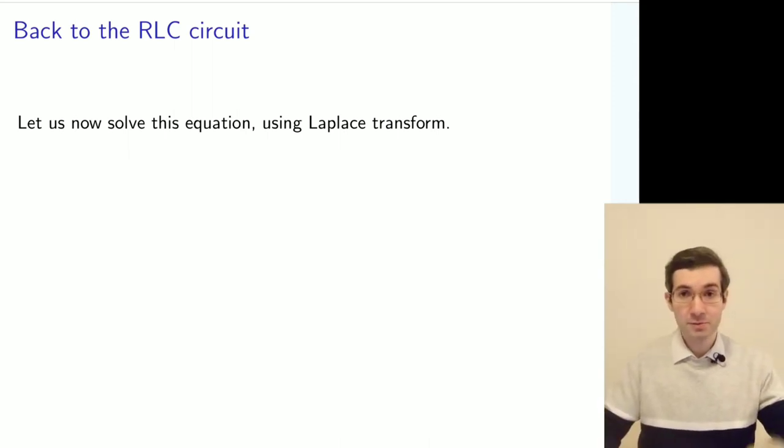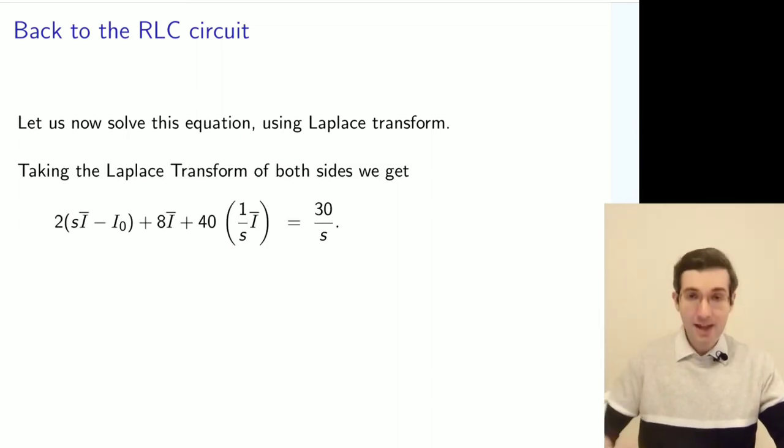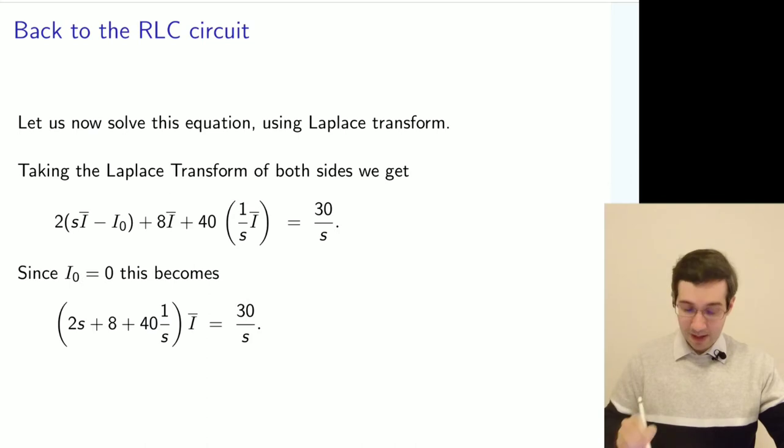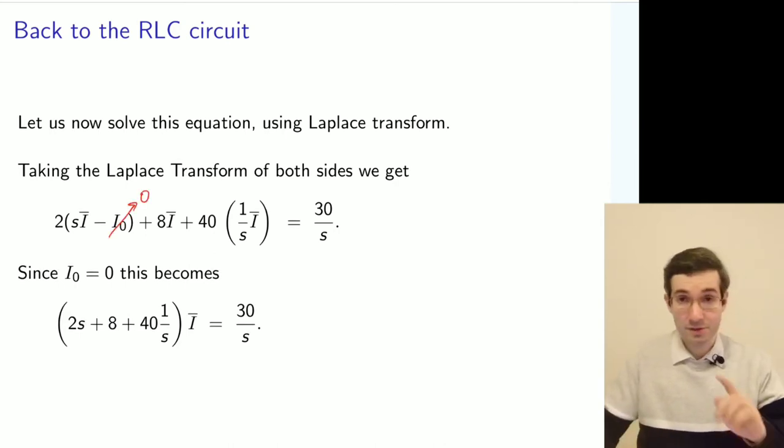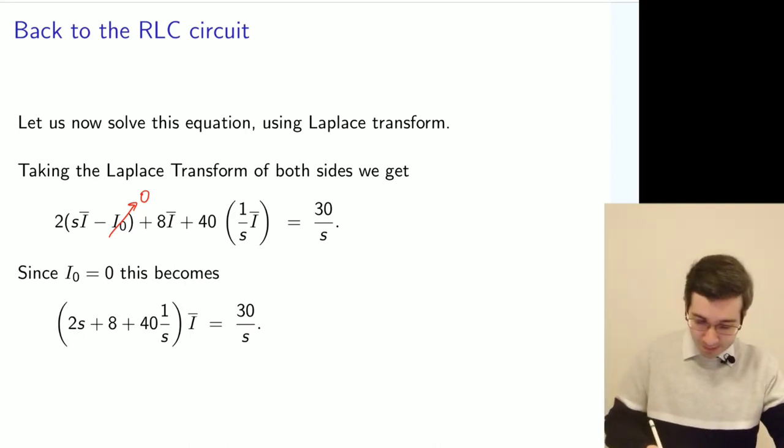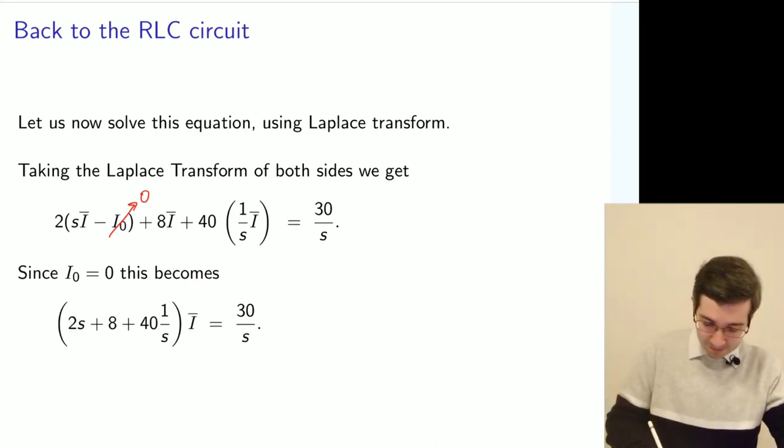Apply Laplace transform to the left-hand side and to the right-hand side. And that gives us, in the end, an algebraic equation. And we also need to use an initial condition to eliminate the constant, because it's zero. We assume it's zero. So we get an algebraic equation. So we complete step 1.